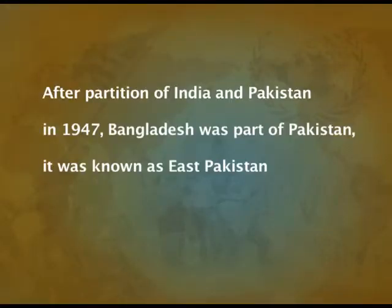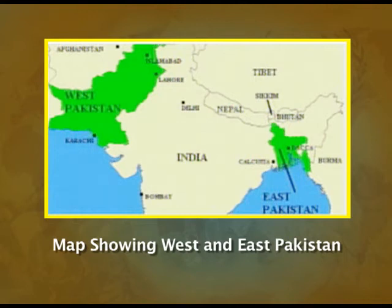Bangladesh is a very interesting case because it came into existence very late, in 1971. To understand how Bangladesh came into being, we need to go back in history. After the partition of India and Pakistan in 1947, Bangladesh was part of Pakistan, known as East Pakistan. As you can see in the map, the two green-colored territories on the east and west are East Pakistan and West Pakistan. East Pakistan consisted of areas of Assam and Bengal.